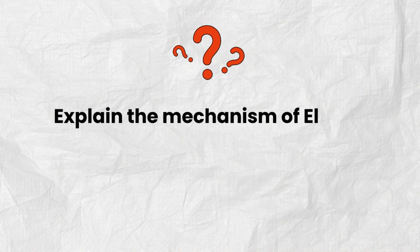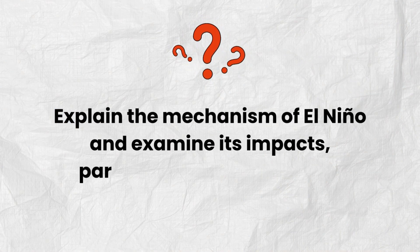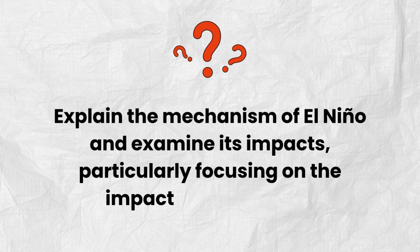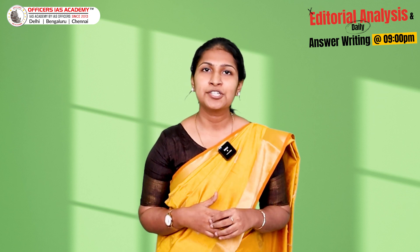This was the overall discussion about the article. Based on the overall discussion, the question for today is: explain the mechanism of El Niño and examine its impacts, particularly focusing on the impact in India. This is a 10-mark question for which you are expected to write an answer within 150 words. We will meet again in yet another interesting topic very soon. Until then, please continue to do this daily answer writing practice as it is going to be very useful for your preparation. All the best.